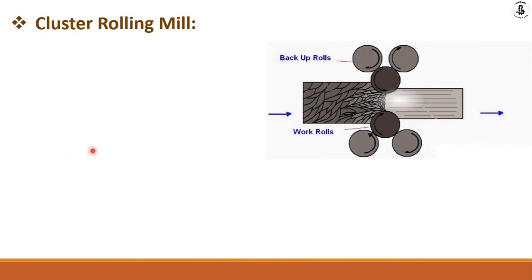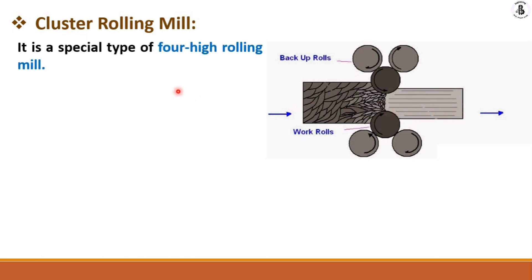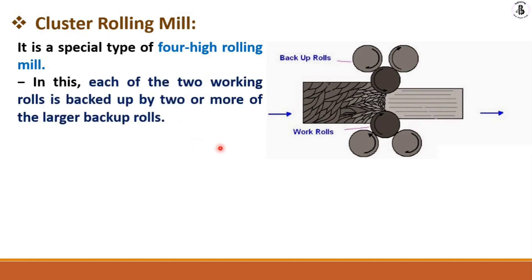Next is the cluster rolling mill. On one side there are two backup rolls and a single working roll. The workpiece is fed from one side and converted into the desired cross-sectional area. The cluster rolling mill is considered a special kind of four-high rolling mill in which each of the two working rolls is backed up by two or more large backup rolls.